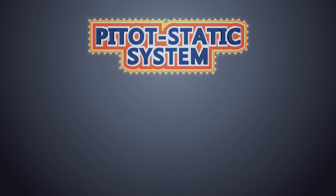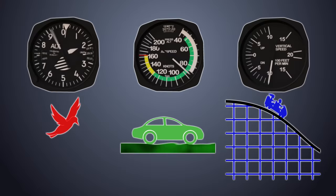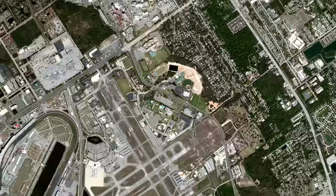The pitostatic system is connected to the airplane's altimeter, airspeed indicator, and vertical speed indicator. These instruments tell the pilot how high they are, how fast they are going, and how fast they climb or descend. These are determined by measuring the pressure of the atmosphere.